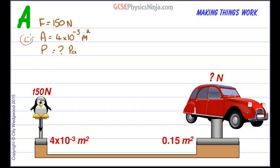Okay, so there's our data list. And now here's the equation. Pressure equals force divided by area. Let's put the numbers in. So we get 150 divided by 4 times 10 to the minus 3. And that gives us a pressure of 37,500, and that will be in pascals.